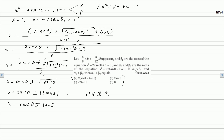Now applying the condition that alpha 1 is greater than beta 1. The roots of the first equation are secθ minus tanθ and secθ plus tanθ. Since tanθ is negative in this range, secθ minus tanθ is greater than secθ plus tanθ. Therefore alpha 1 equals secθ minus tanθ and beta 1 equals secθ plus tanθ.